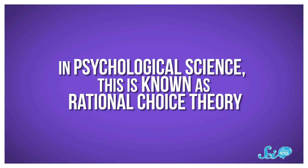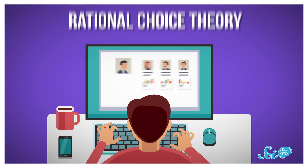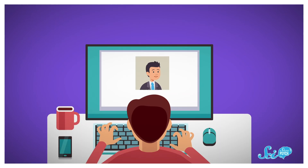Consciously or not, all politicians try to take advantage of that during their campaigns. We often think of votes as logical, position-based choices. In psychological science, this is known as rational choice theory. It assumes voters study each candidate's positions and then select the one whose views and policies they most agree with, or which benefit them.